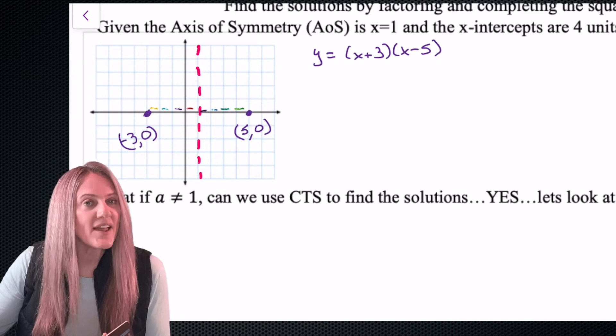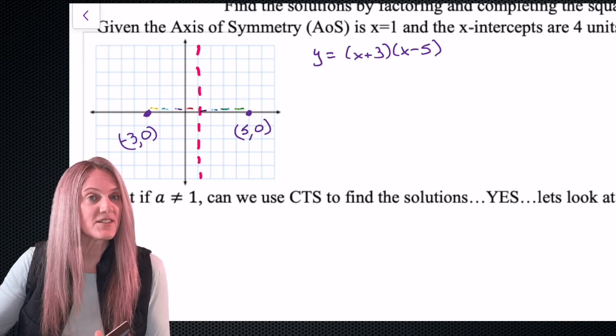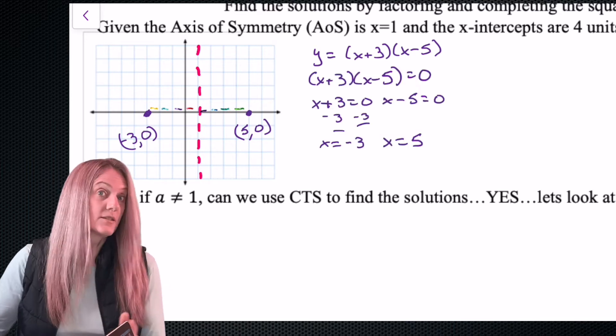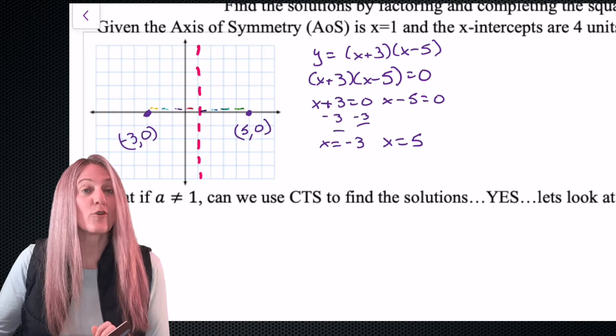Next let's look algebraically at finding the solutions. So to find the x-intercepts, the solutions, y equals 0. Surprise! We got x equals negative 3 and x equals 5 for our solutions.